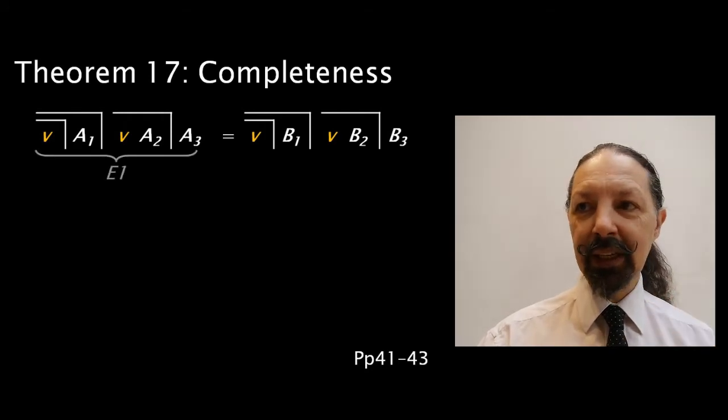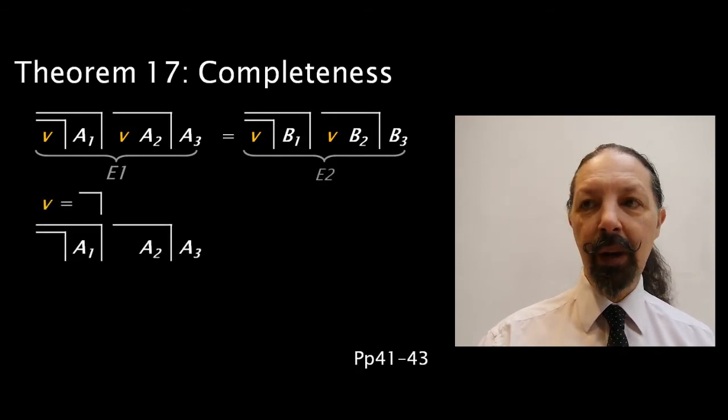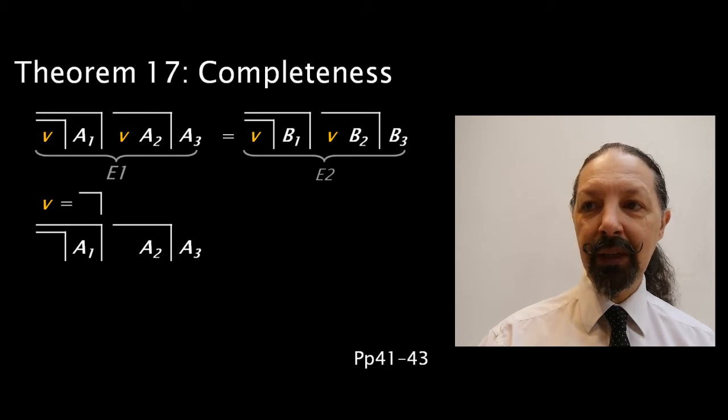We're going to take the left-hand expression, call it E1, and the right-hand one, and call it E2. If we substitute a mark for the V term in E1, it looks like this.